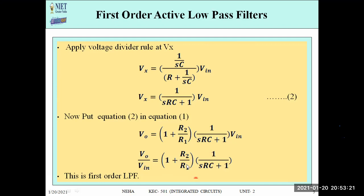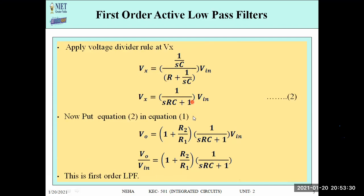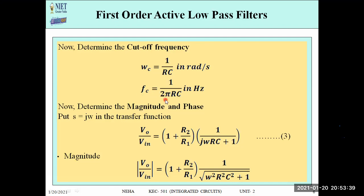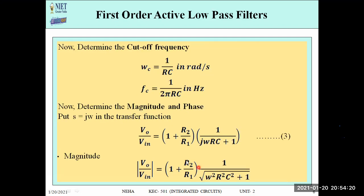The cutoff frequency is 1/(RC) in radians per second, or 1/(2πRC) in hertz. To calculate magnitude and phase, we substitute s = jω into the transfer function. The magnitude is: |V_out/V_in| = (1 + R2/R1) divided by the square root of (1 + ω²R²C²).